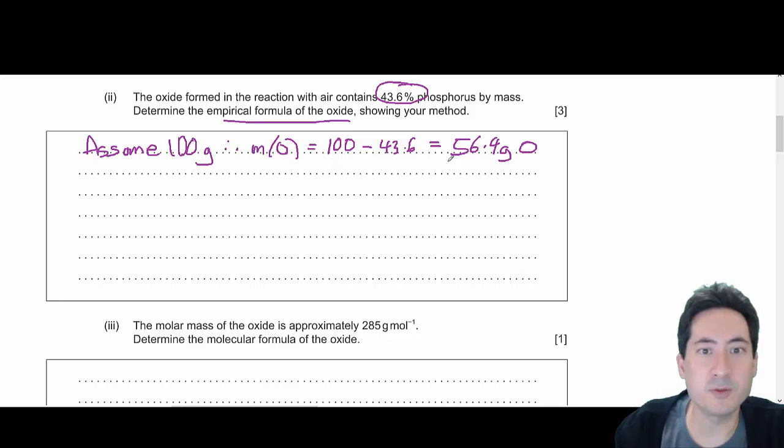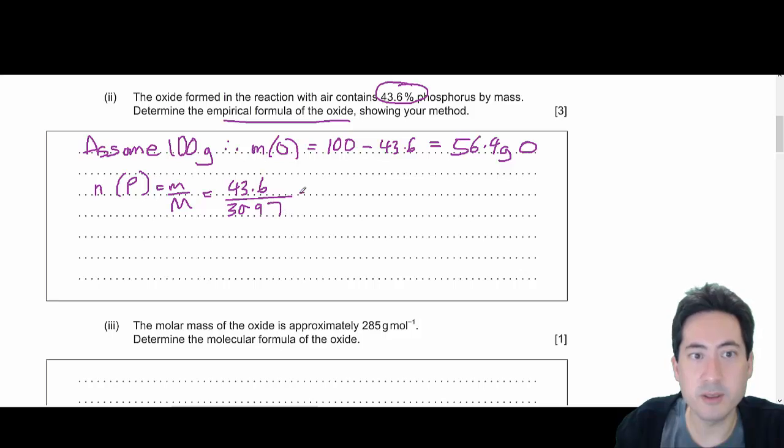And so the empirical formula, so you've got the masses now, so you can work out the number of moles of phosphorus. It's mass on molar mass, and so if you look up your data booklet, the data booklet says 30.97, and plug those numbers into a calculator, and you get 1.408.